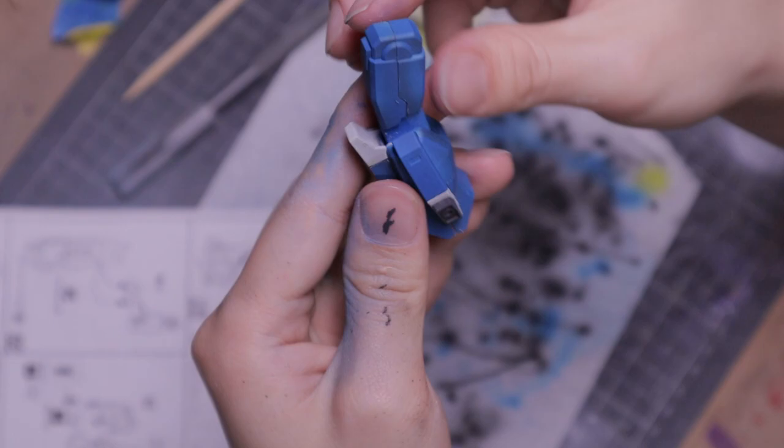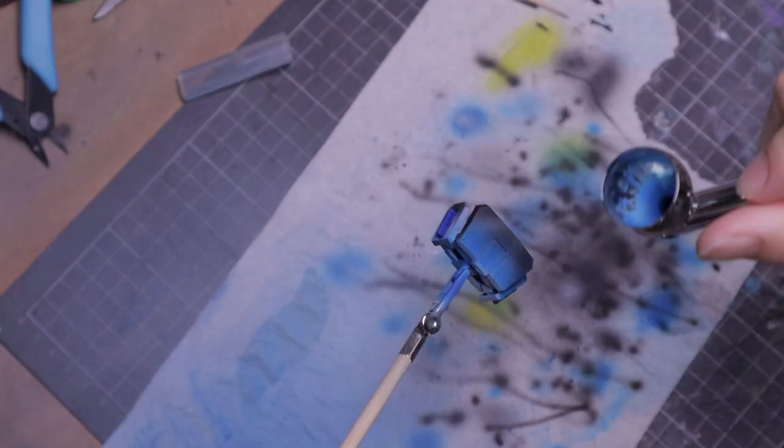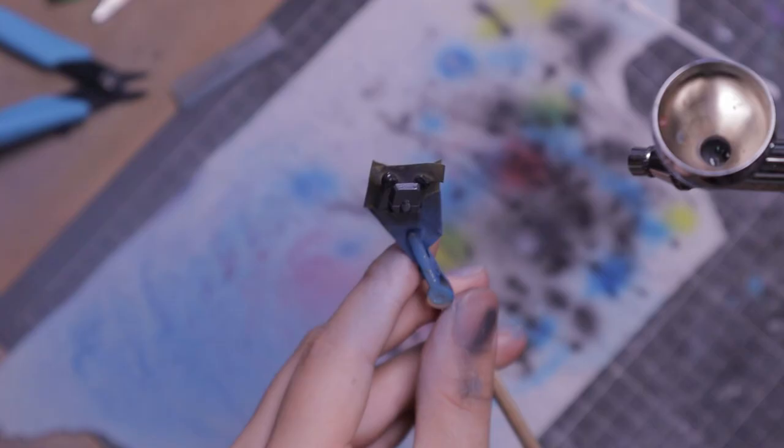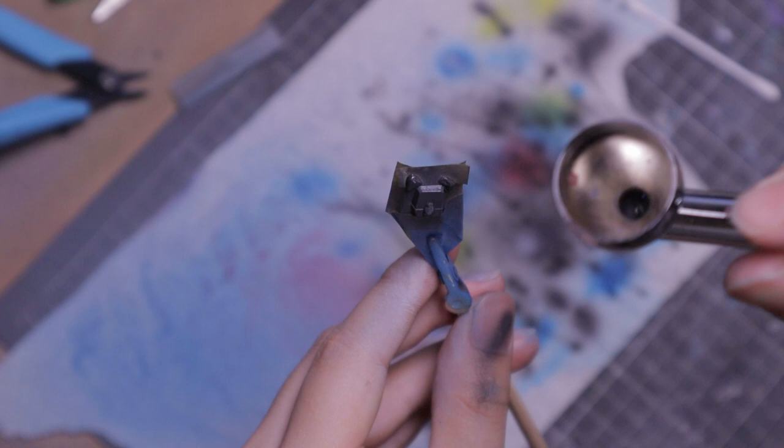For the hip assembly, I start by basing blue. Then white for the skirt armor detail. Red for the top of the crotch armor. Mask out the sections which I need to be gray and touch up with a brush. Apply matte varnish and reassemble the hip unit. And while I'm at it, attach the legs.